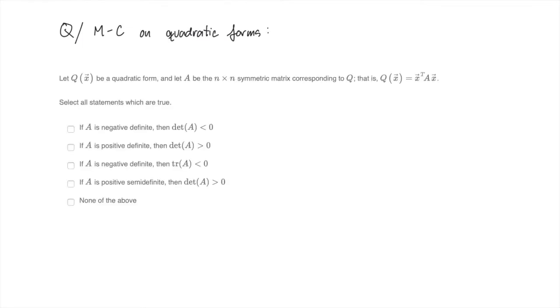The first one is about quadratic forms. We're given a quadratic form Q, and we consider the symmetric matrix A corresponding to Q. We need to identify all statements which must be true. If you want, pause the video and see if you can answer this for yourself before moving on.